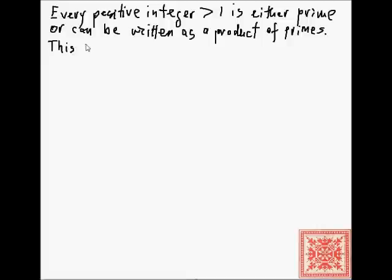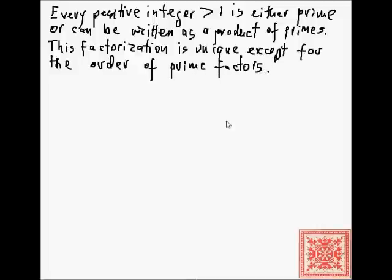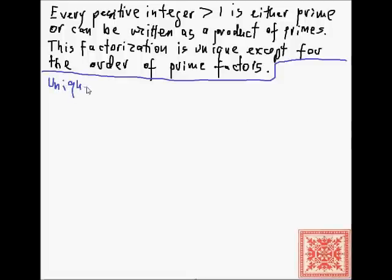In addition, this factorization is unique, except for the order of the prime factors. In other words, we can arrange those prime factors in any way we want in the product, but the prime factors will remain the same. This is also known as the fundamental theorem of arithmetic. Sometimes it is stated that every positive integer greater than 1 has a unique prime factorization.